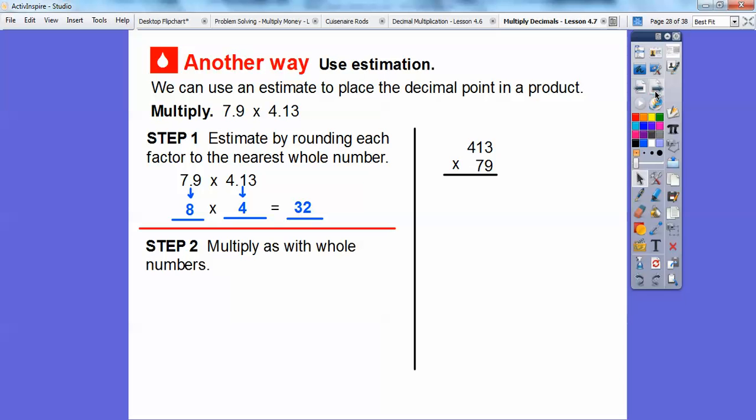So let's just now go ahead and multiply without the decimals. 413 times 79. So here goes the 9 right there. And then we're going to multiply the 7 through, so we've got to carry the 0 because it's in the tenth spot. So there's the 7 getting multiplied through. Now we're going to add up the partial products, and we get 32627.